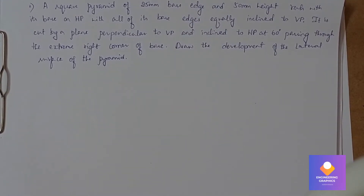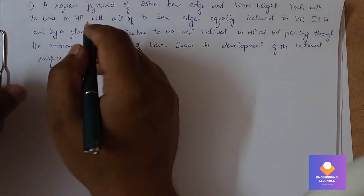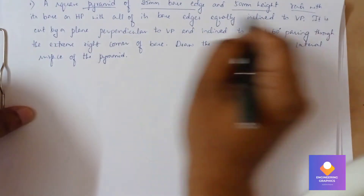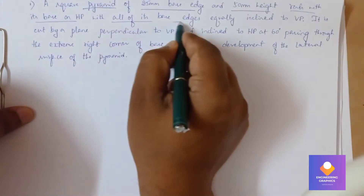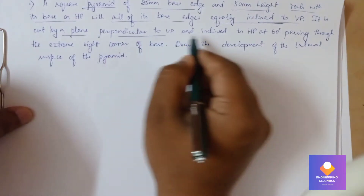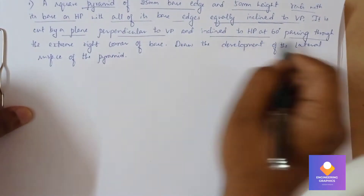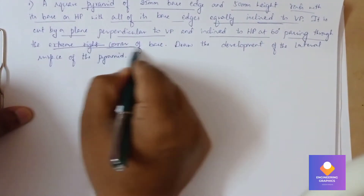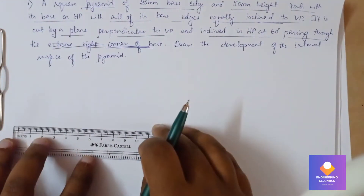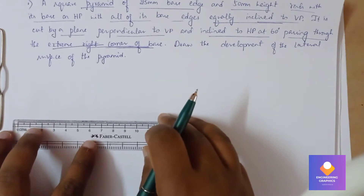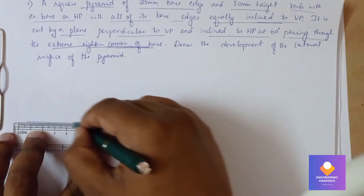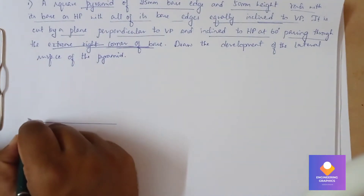We have to construct a square pyramid of base dimension 25mm and height 50mm, resting with its base on HP, with all of its base edges equally inclined to VP. That means we need to construct with respect to a corner. It is cut by a plane perpendicular to VP, inclined at 60 degrees, passing through the extreme right corner of the base.